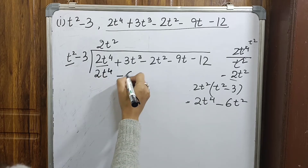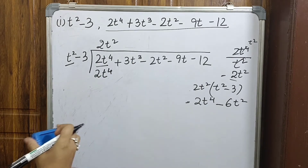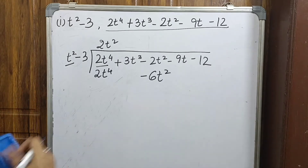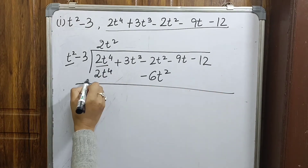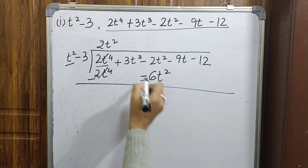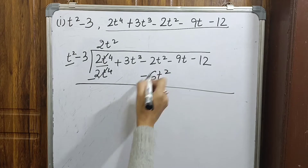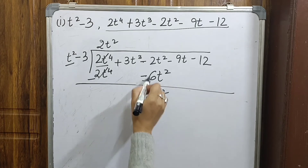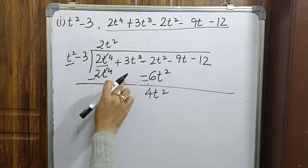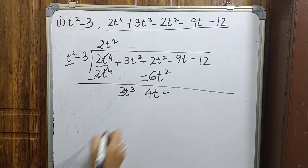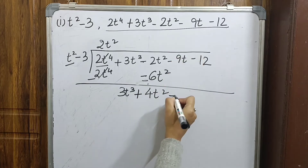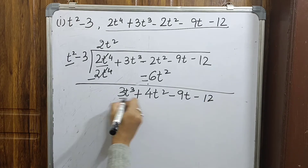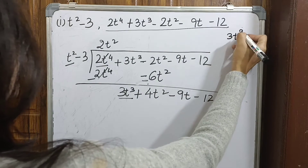We subtract: 2t⁴ cancels, and -2t² minus -6t² gives +4t². We bring down the remaining terms, so we now have 3t³ + 4t² - 9t - 12. Next, we divide 3t³ by t², which gives 3t.